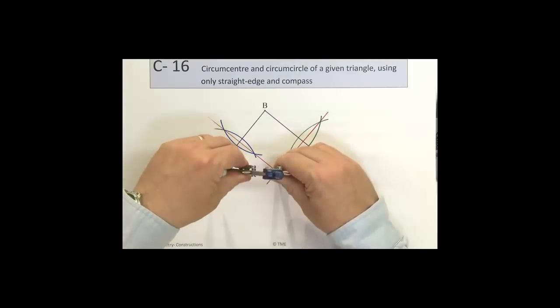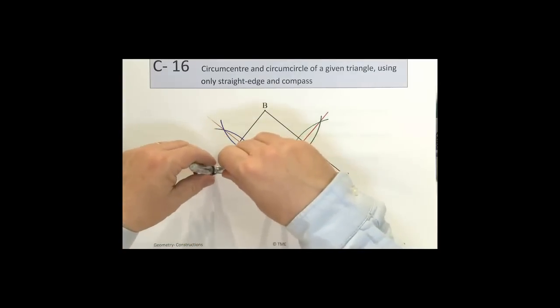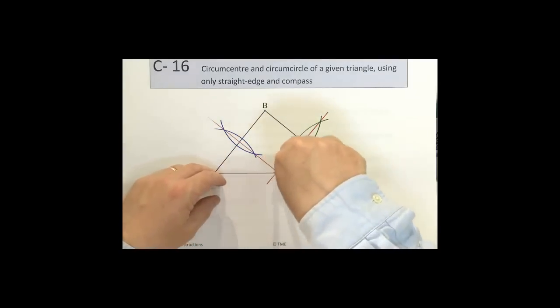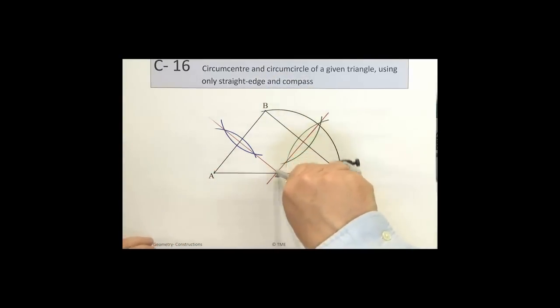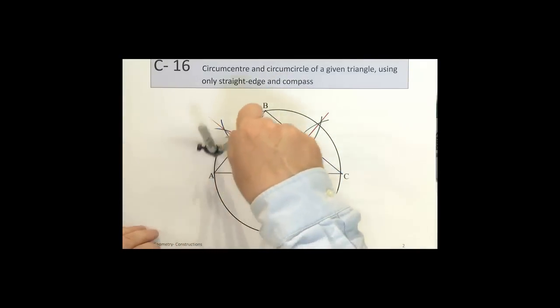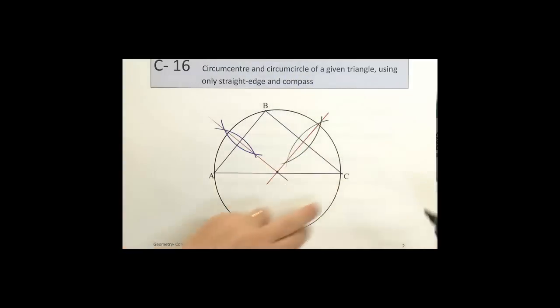Maybe a little bit more. We construct our circle. And that circle takes in the three points A, B, and C. That's our circumcircle.